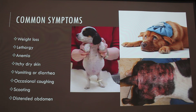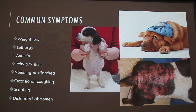A distended abdomen, shown here, is another symptom. Worms are really common in puppies — they pass them around easily, so it's really important that if you get a puppy from a breeder or anywhere else, the puppy is dewormed every couple of weeks as they age.